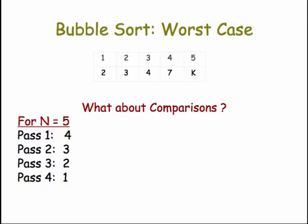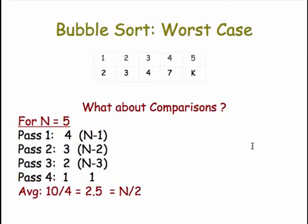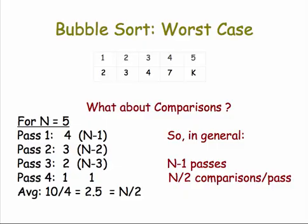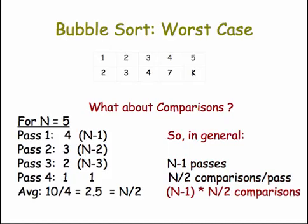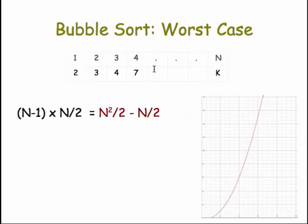What about comparisons? For n equals five, we saw that on the first pass we needed four comparisons, that's n minus one. On the second pass we needed three, which is n minus two. Then we needed two, which is n minus three. The last pass we needed one comparison. We did a total of ten comparisons over the four passes, which is an average of two and a half, which happens to be n over two. In general, to sort n cards, we make n minus one passes and n over two comparisons per pass. That gives us the formula: n minus one times n over two.